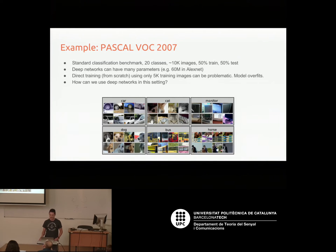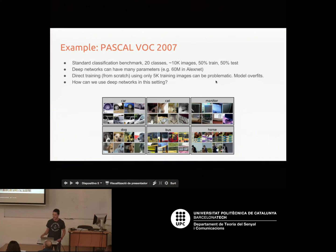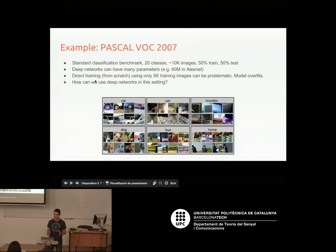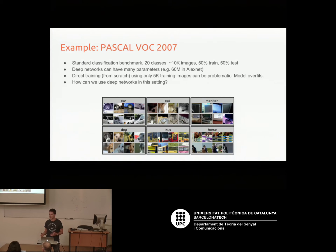As an example, there's a dataset called Pascal VOC 2007, a standard benchmark with about 20 classes and around 10,000 images split roughly 50-50 into train and test. Deep networks like AlexNet have about 60 million parameters, and many more in VGG. So direct training from scratch using only 5,000 images and 20 classes — you're not going to get very far because you'll probably overfit. You just don't have enough images for that number of parameters.